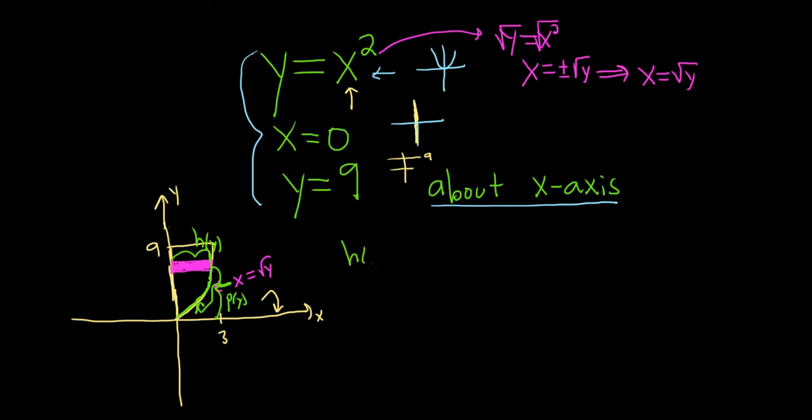Okay, so h of y, it's right minus left. So it's just going to be x equals square root of y. So it would just be the square root of y. Remember, whenever you have a horizontal rectangle, it's right minus left. Vertical rectangles, it's top minus bottom.